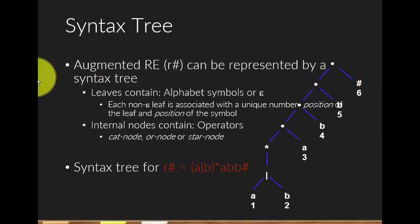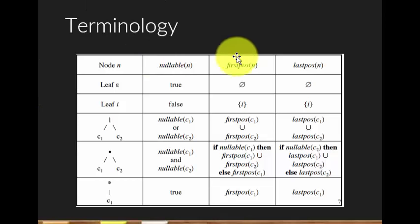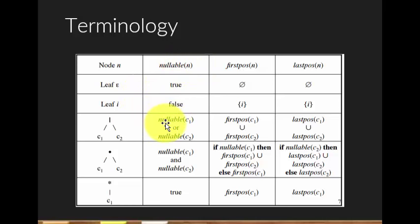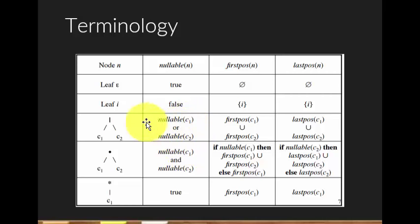There are three new terminologies you will learn here: firstpos, lastpos, and followpos, and also nullable. Nullable signifies which nodes can be cancelled out. For example, a star node (Kleene closure) is always nullable — it can have zero or more occurrences of the symbol enclosed in it.